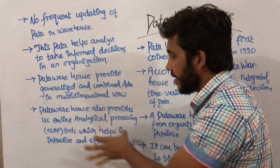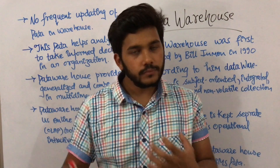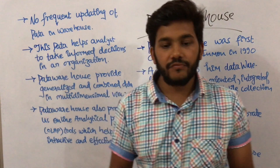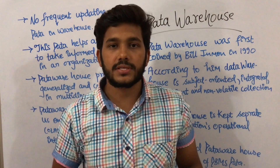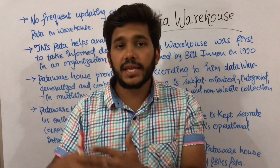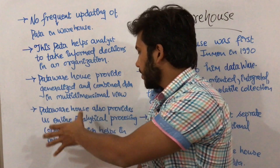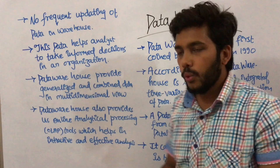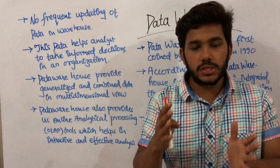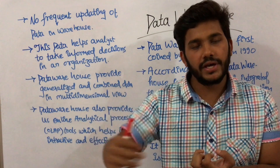Data warehouse also provides online analytical processing (OLAP) tools which help in interactive and effective analysis. Since we have a large amount of data, we can analyze it with the help of OLAP tools and extract useful information. For example, if I see that in December I sell more non-veg than veg, I can stock more non-veg items in December. These tools help with interactive and effective analysis because you can sort data based on your need and extract what you want from the data warehouse.